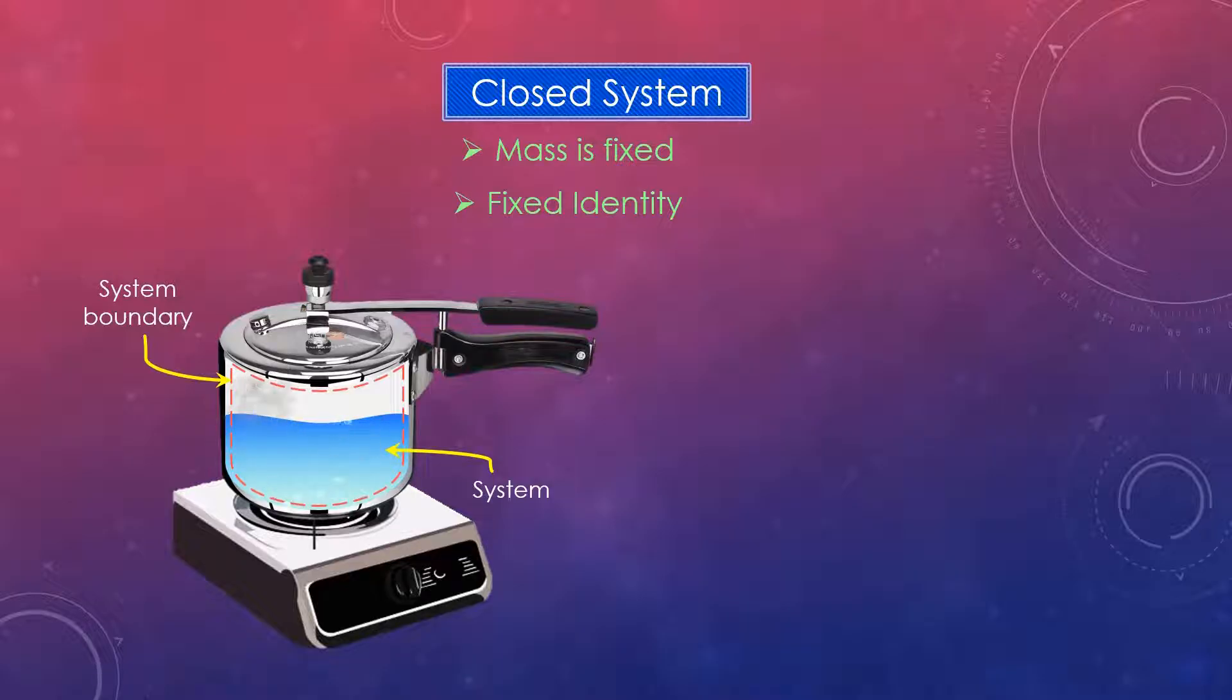After some time the water converts to steam which creates pressure inside the cooker and escapes through the valve on the top. Now to use the system approach for analysis we have to also consider the moving steam and track it to keep the mass of the system constant, which is a very difficult task.